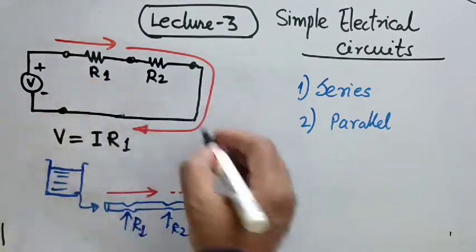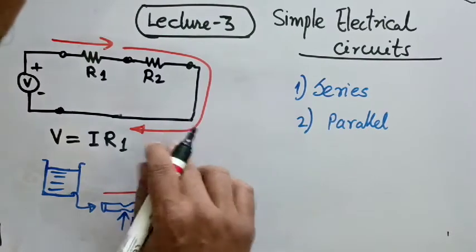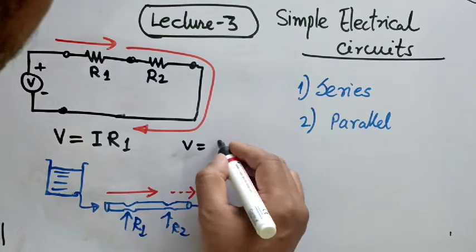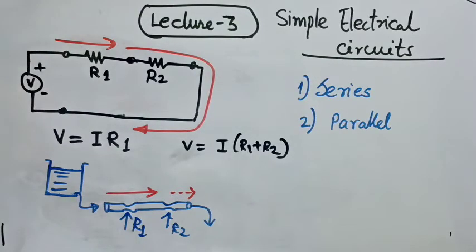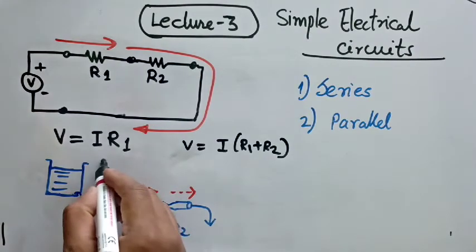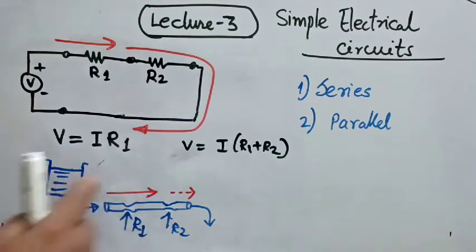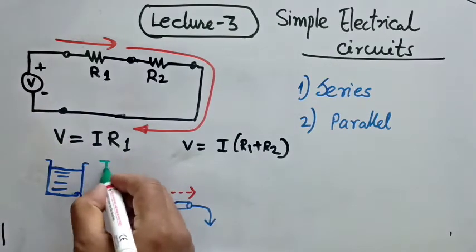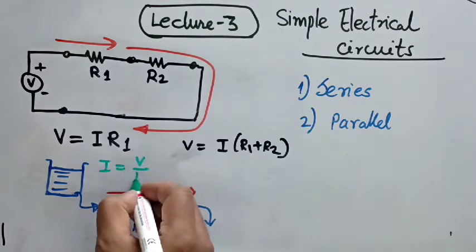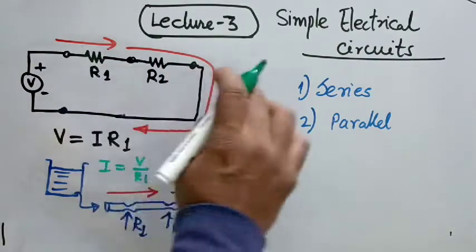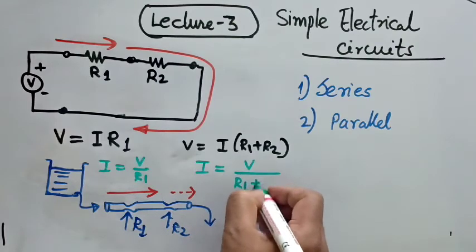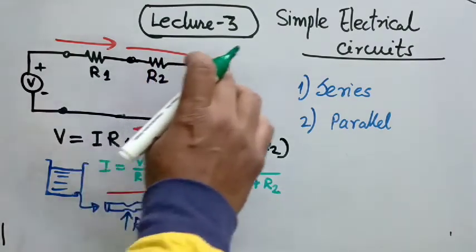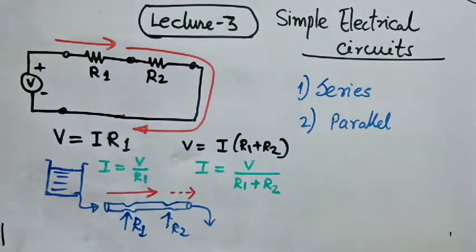Now in this new circuit diagram, the voltage V is basically I times R1 plus R2. The current I here is V divided by R1 plus R2. If you apply more resistance in series, the current will reduce further with a factor of another R2. So the more resistance you keep on adding in series, the more the current will reduce eventually.